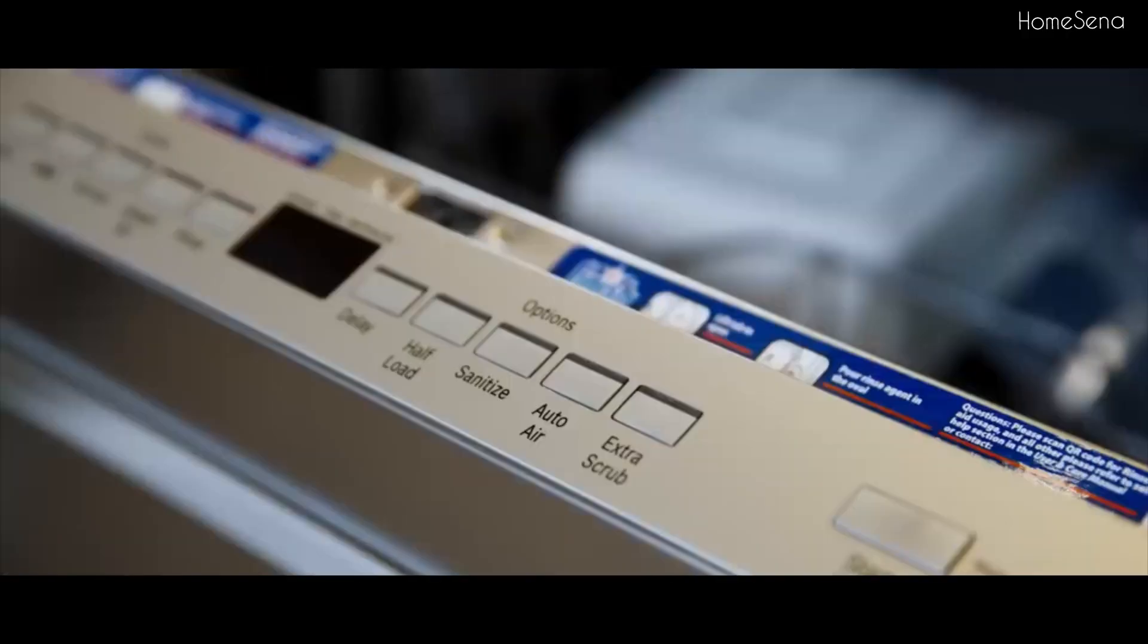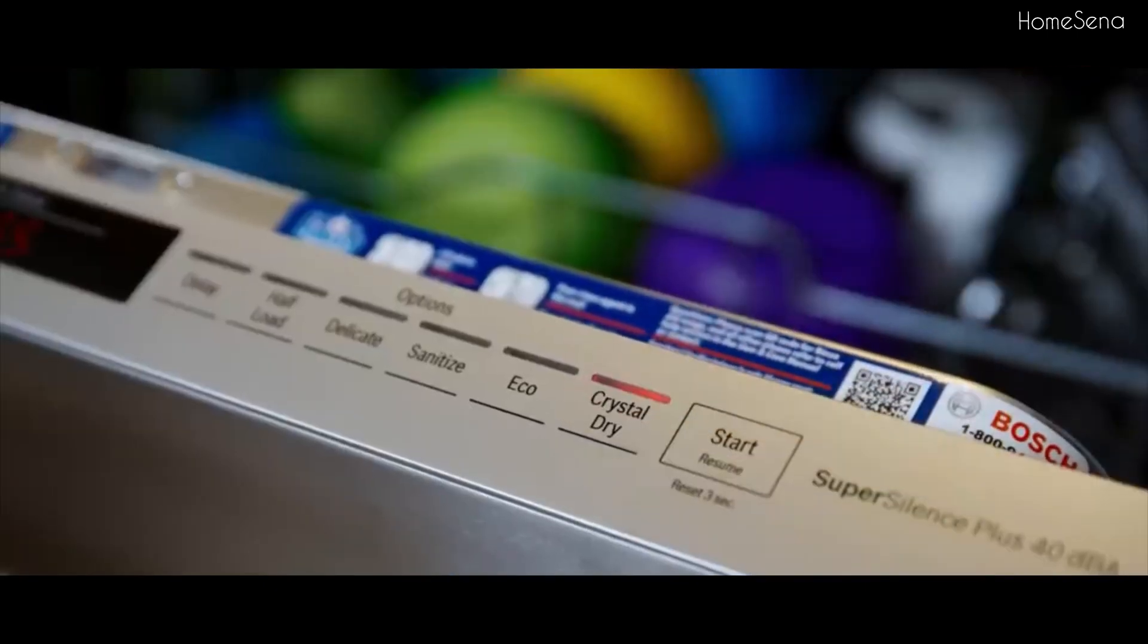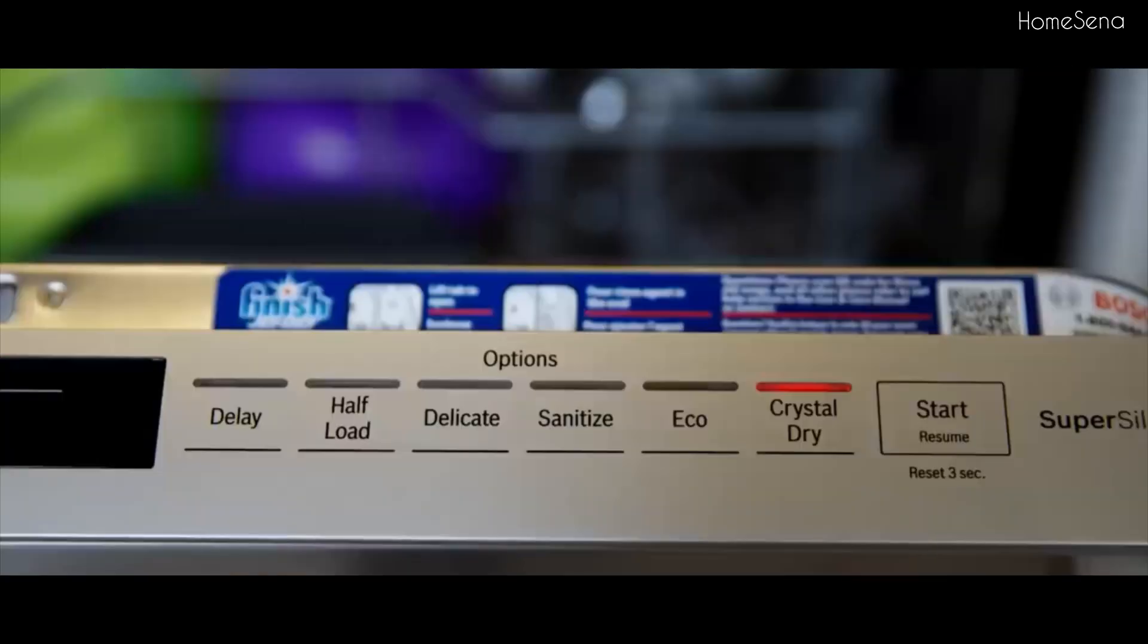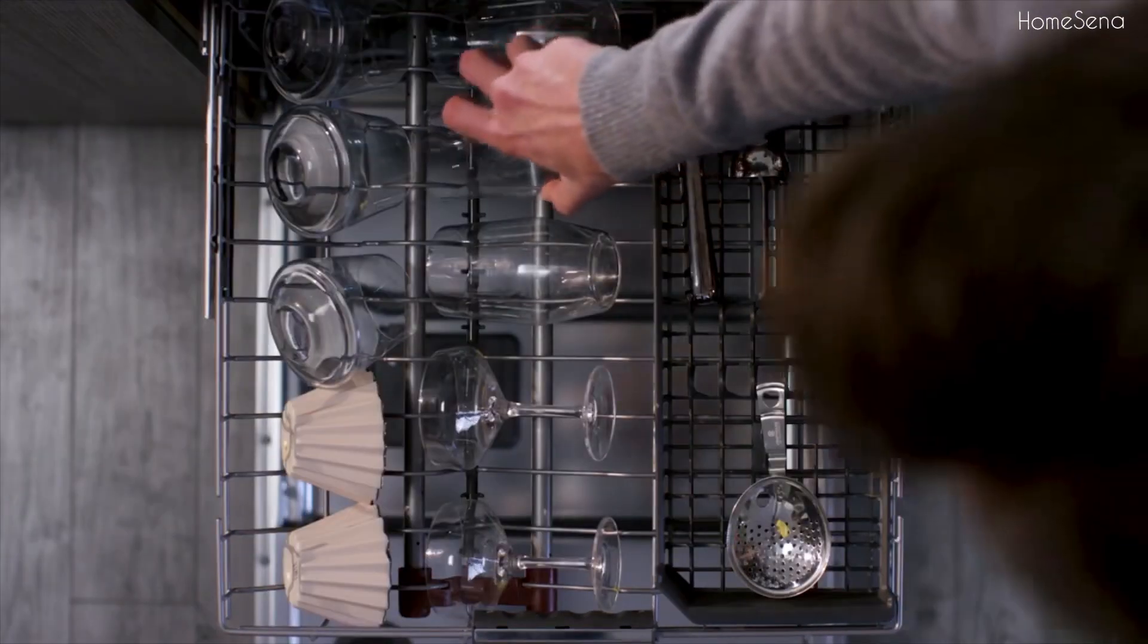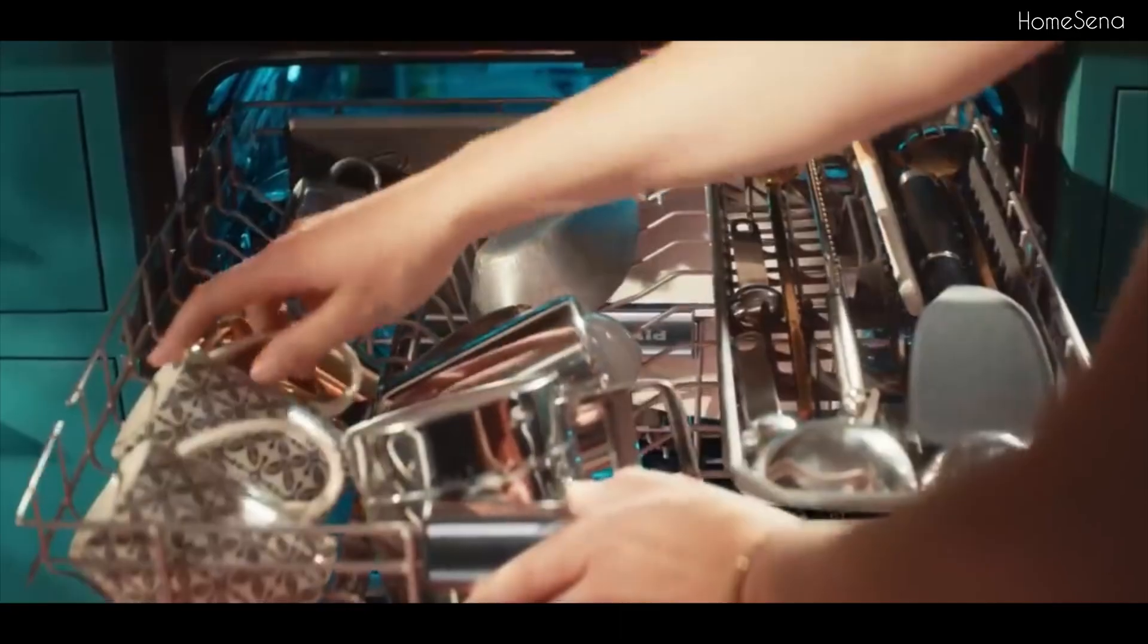Now, let's talk features and funkiness. Bosch comes armed with techie toys like auto-detergent adjusters, Wi-Fi control, and a plethora of wash cycles. KitchenAid keeps it simple yet effective, boasting easy-to-use controls and reliable performance.